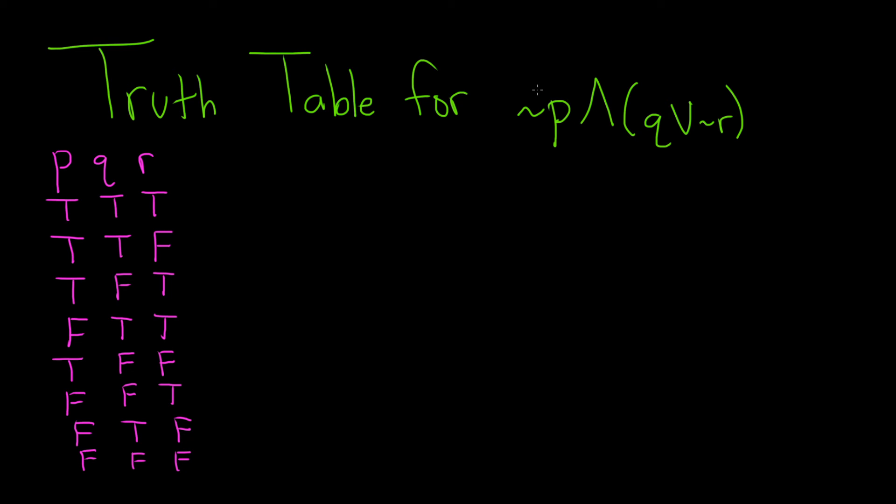Now we have to construct this statement. We're going to need the not p piece. Let's go ahead and write that down. We also need to get this q or not r piece, so we'll need the not r. And then at this point, we can write the q or not r.